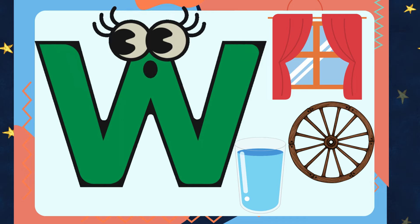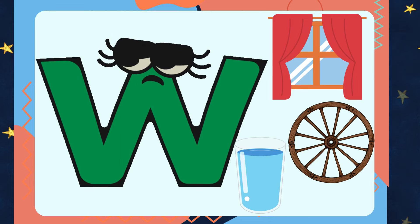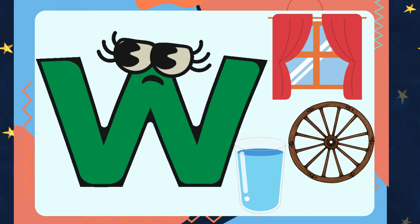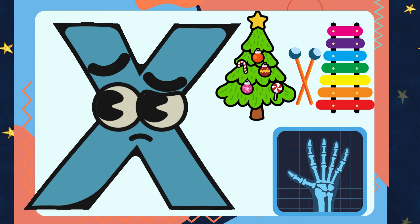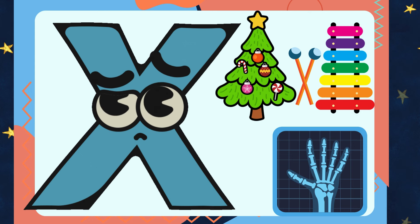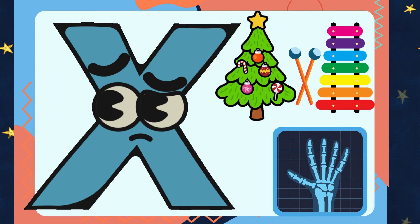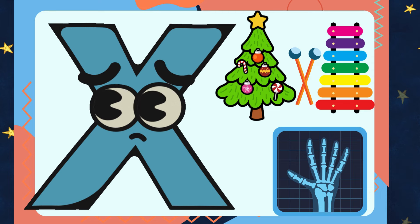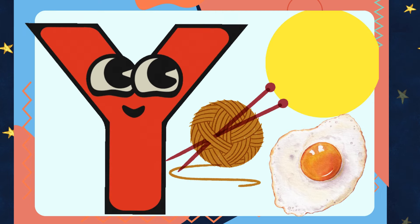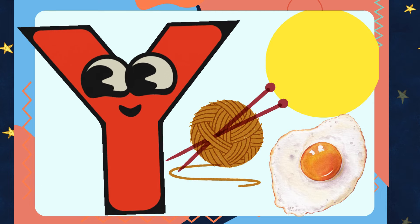W is for Window, Wheel, Water. X is for Xmas Tree, X-ray, Xylophone.